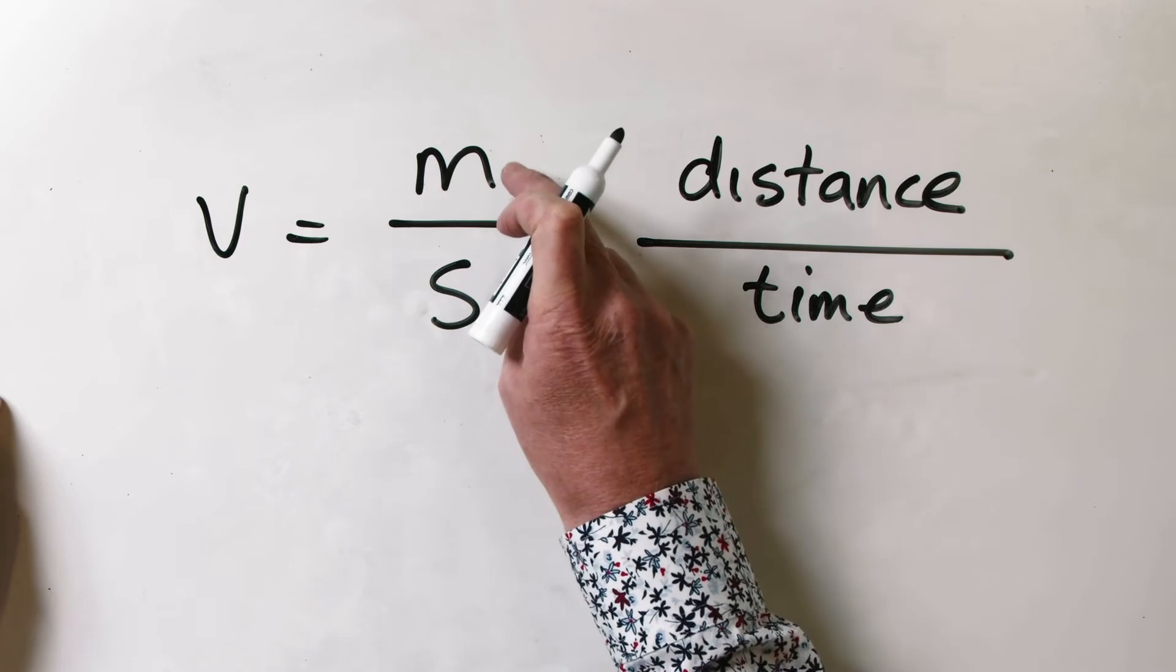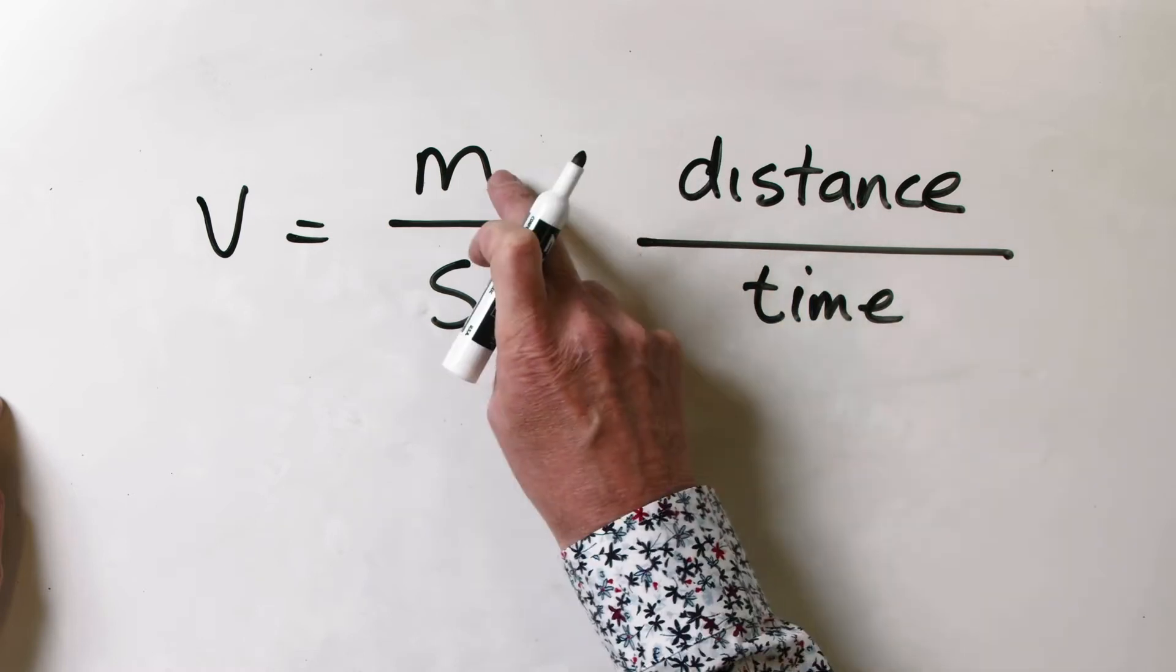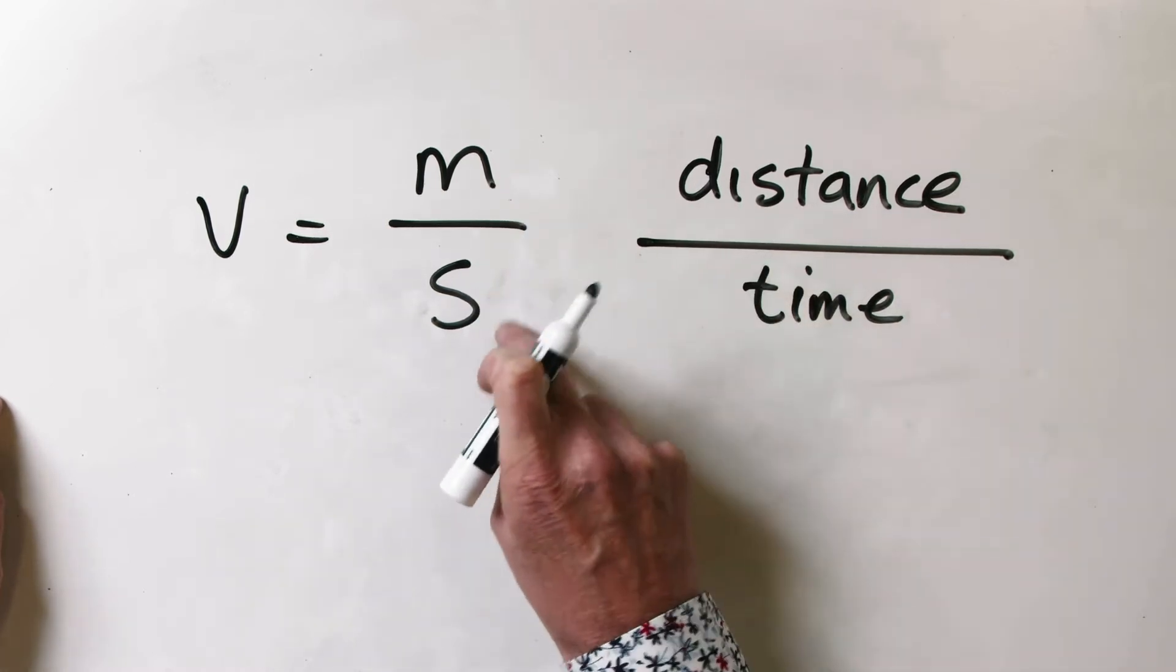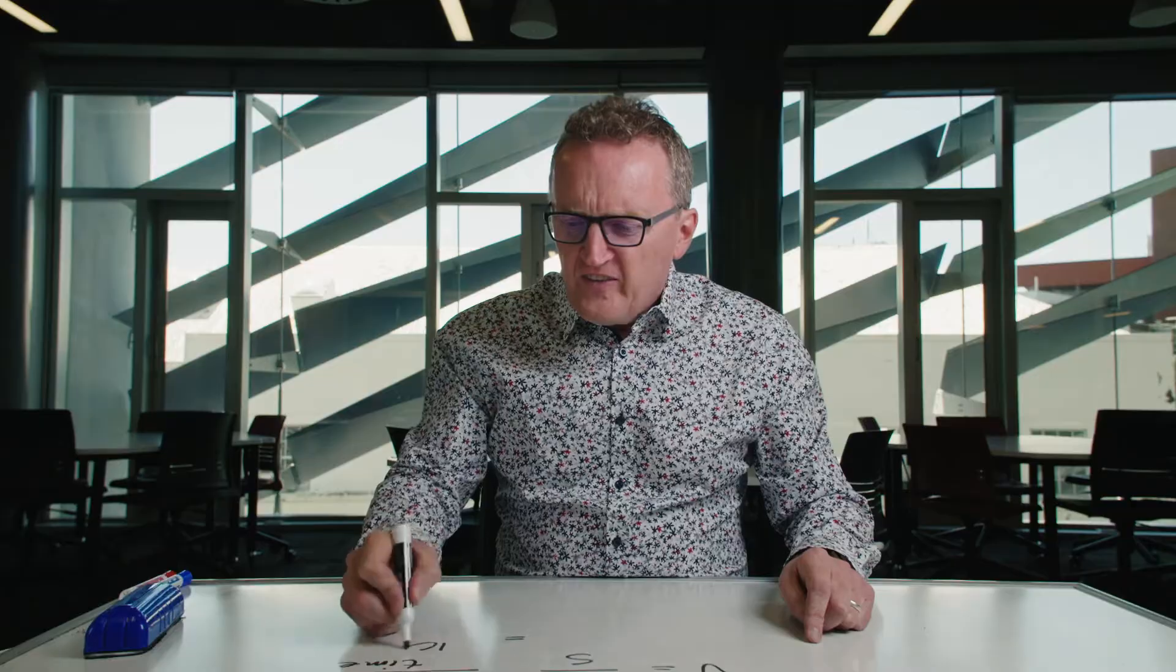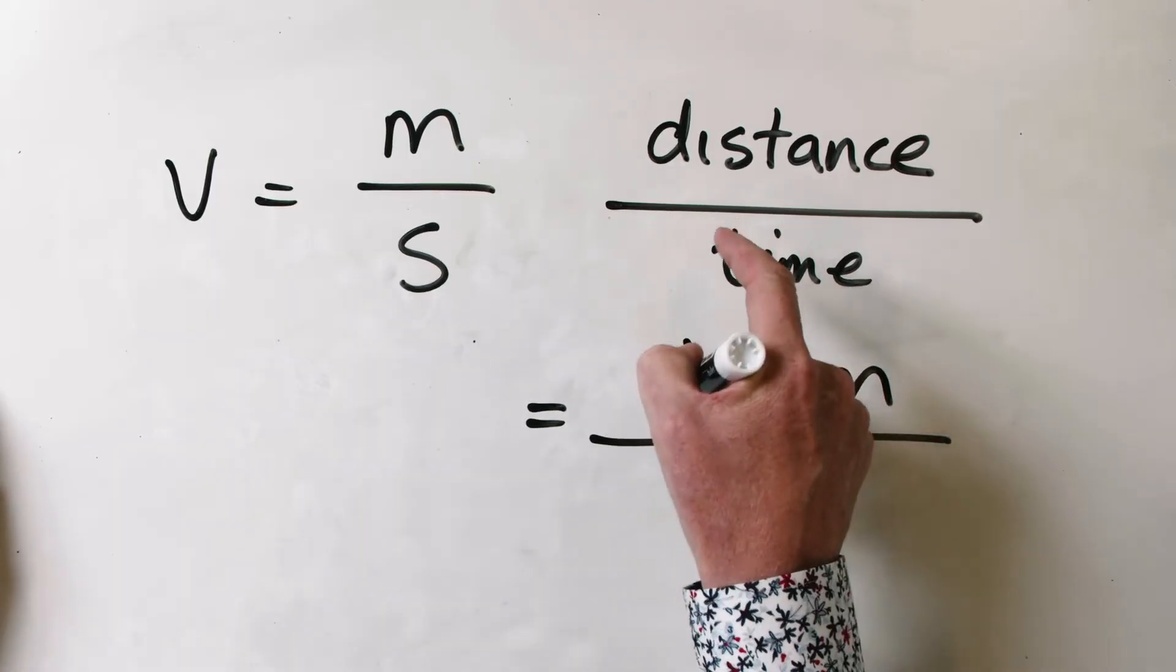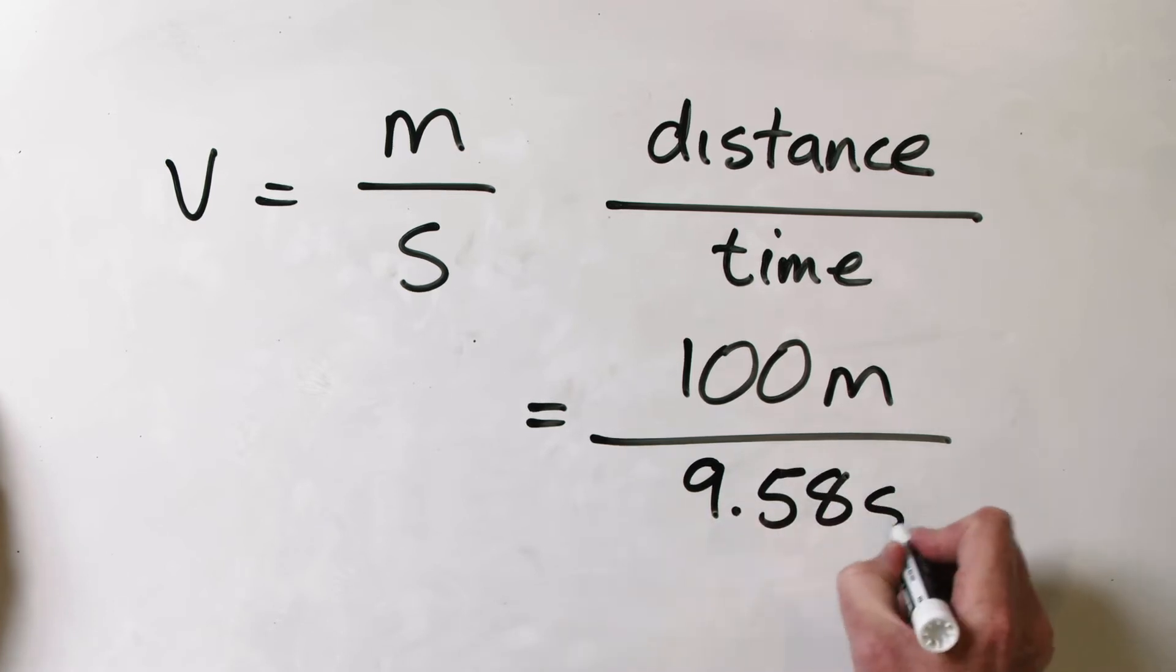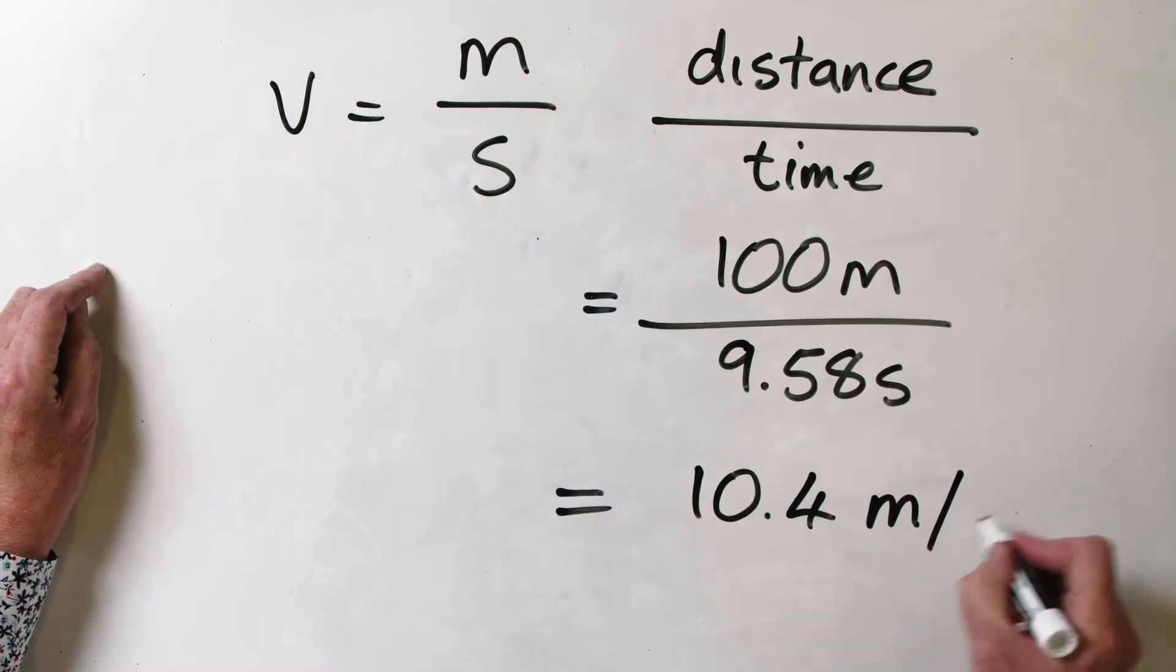That's units of metres, units of seconds. What corresponds to units of metres? In metres we measure distance. What do we measure in seconds? We measure time. And so therefore, our distance in this case is 100 metres. Our time is 9.58 seconds. And if we do the quick mental calculation, we end up with 10.4 metres per second.